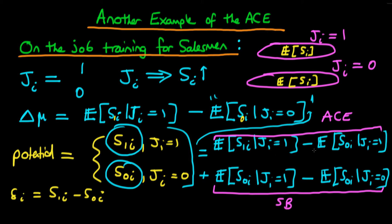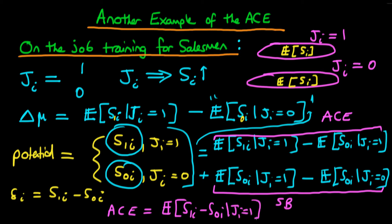Why does the top expression represent the average causal effect? Conditional on Ji, we can rewrite it as the expected value of S1i minus S0i given Ji equals one, since both expressions share the same conditioning and can be combined. This represents the delta i we discussed, with the difference being that we're conditioning on being in the trained group — so this technically refers to the average causal effect on those which were treated. We expect the average causal effect of on-the-job training to increase sales, meaning the average causal effect is greater than zero.